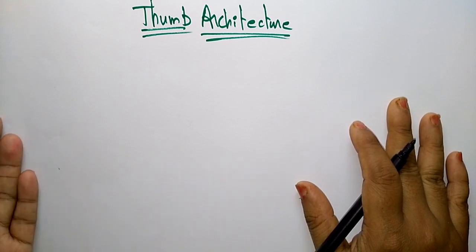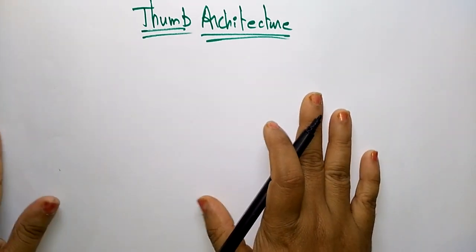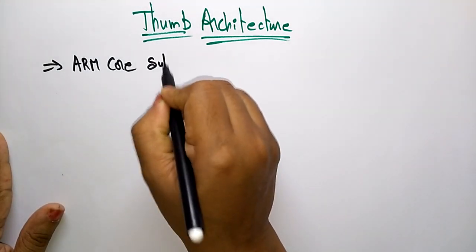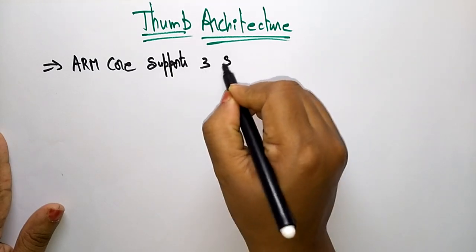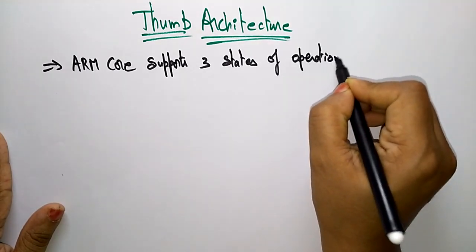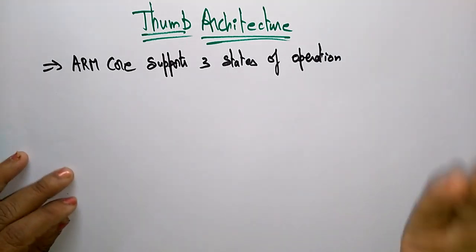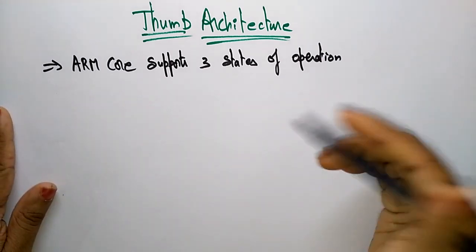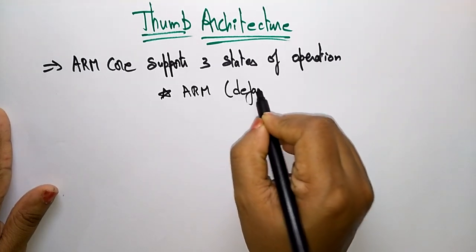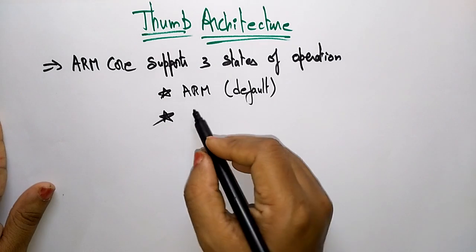The ARM core supports three states of operations. Whatever processor or microcontroller we are taking, if it is an ARM, that ARM can support three states of operations. Based on your configuration you can prefer any of these states. One is the ARM — it's the default. The default is ARM, Advanced RISC Machine. Another state of operation is Thumb.